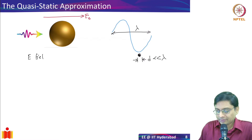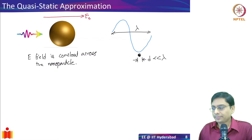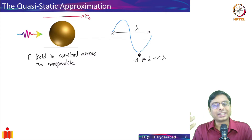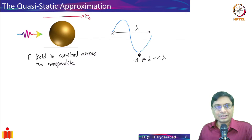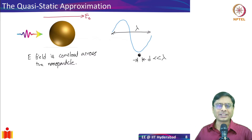What happens when you have such a quasi-static approximation? This is the simplest problem you would have solved in electrostatics. If you look at a book like Griffiths — Introduction to Electrodynamics, chapter 3 — it solves how a metal sphere interacts with a constant electric field. The electric field is constant at any particular instant, but over time it keeps switching direction back and forth. We assume that at any particular instant it is constant across the nanoparticle.